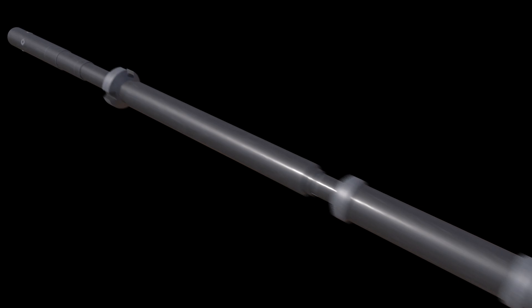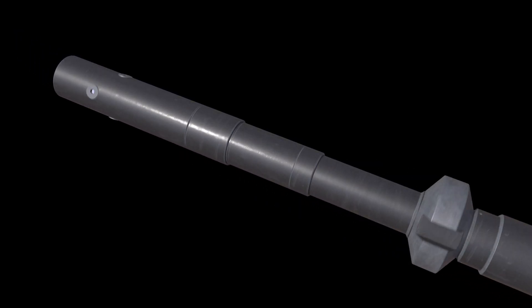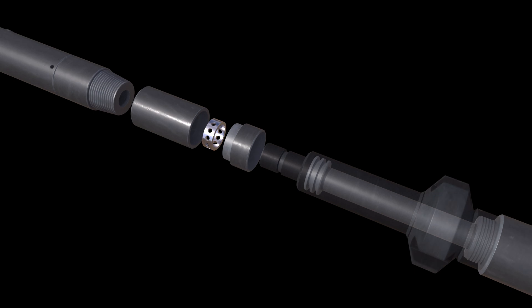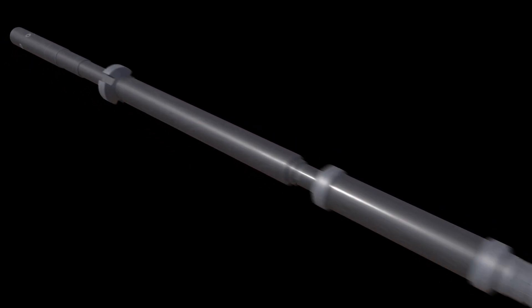In case the tool gets stuck in hole, there's a safety shear sub on top. This shear value is greater than the shear value of the retainer. Hopefully, in a stuck-in-hole situation, you shear off the retainer first to prevent costly lost-in-hole tool charges.